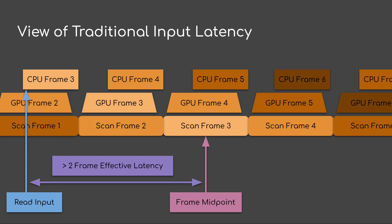Let's take a view of traditional input latency. On the top we have the CPU part of the frame — this would be the work to generate the command buffer. Typically you read input at the beginning and towards the end you're going to do your submit. The next row we have the GPU frames, so for every corresponding CPU frame after the submit you have the execution for the frame on the GPU. In this example I've tightened up the gap between CPU and GPU pretty decently.